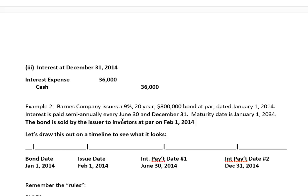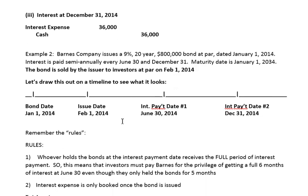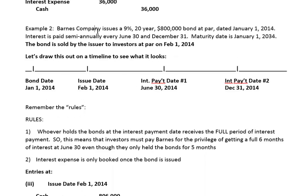Now let's look at a second example. Barnes issues a 9%, 20-year, $800,000 bond at par. The bond date, maturity date, and semi-annual interest payment dates are the same as our first example. But instead of issuing the bonds on March 1st, we're changing the date for practice: what if the bond is sold by the issuer, Barnes, to its investors on February 1st, 2014?